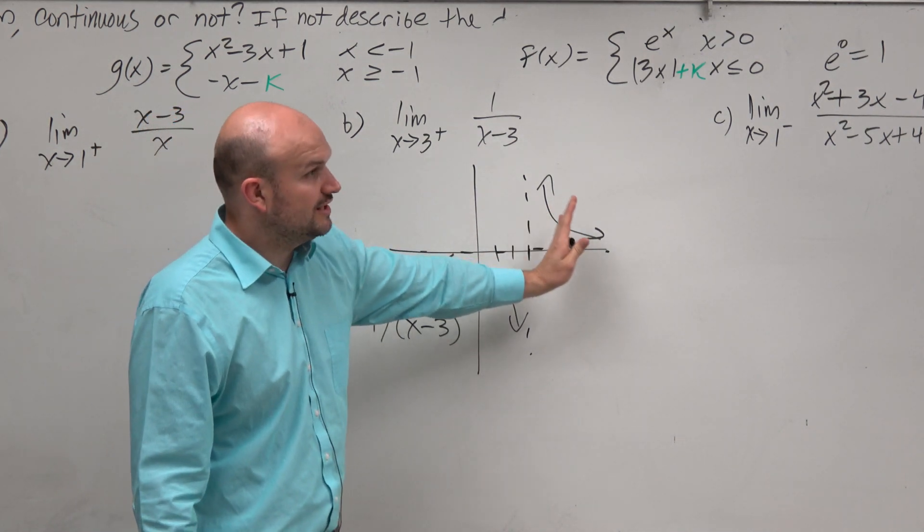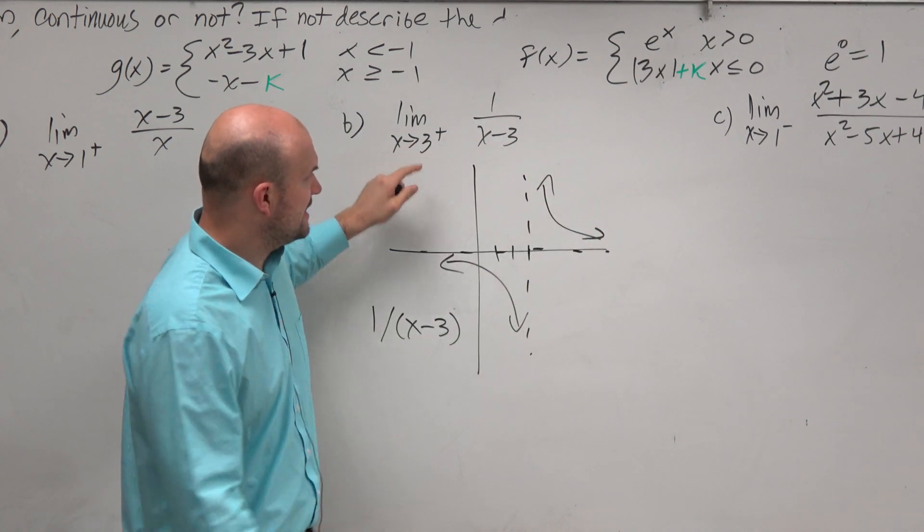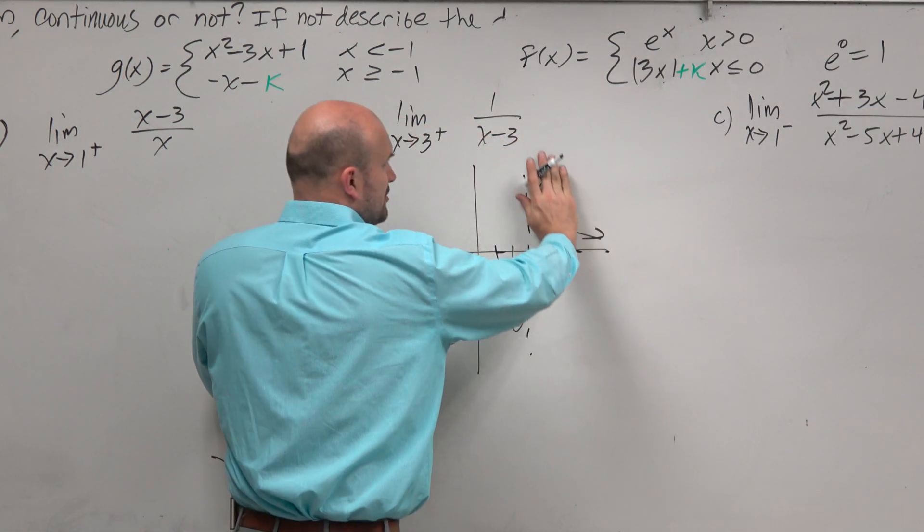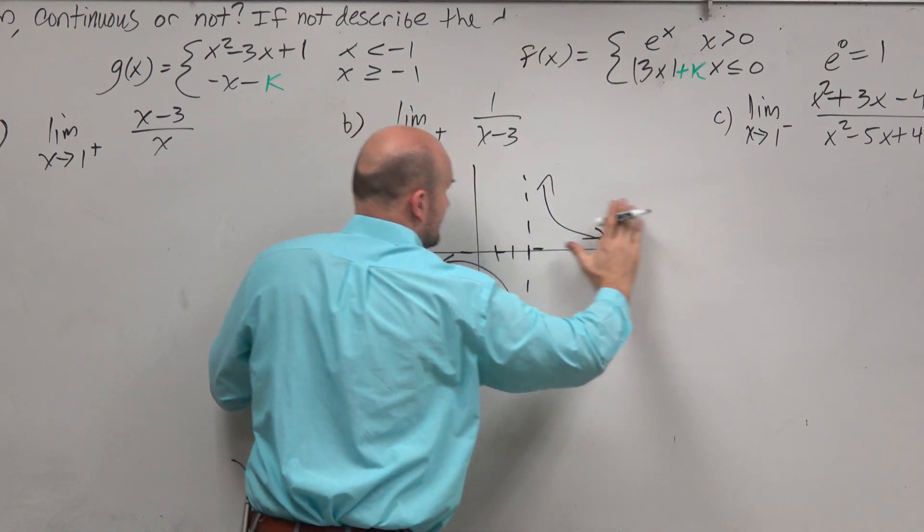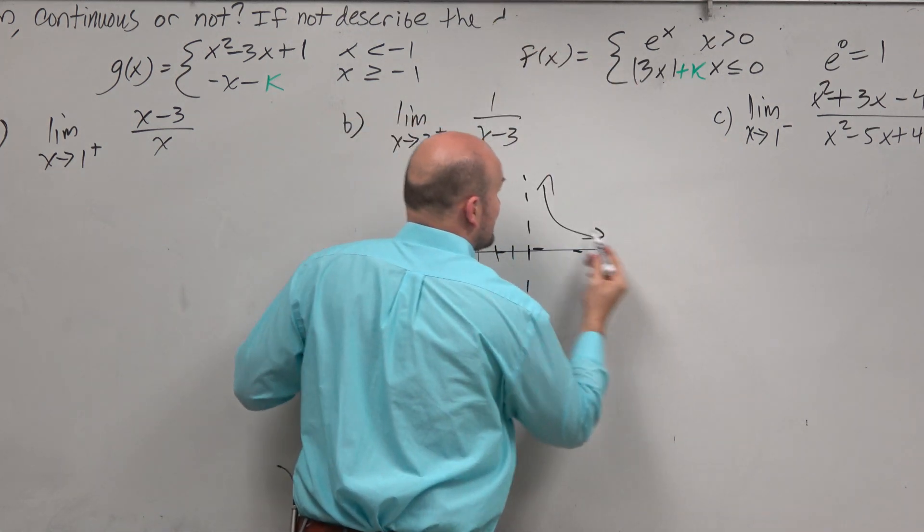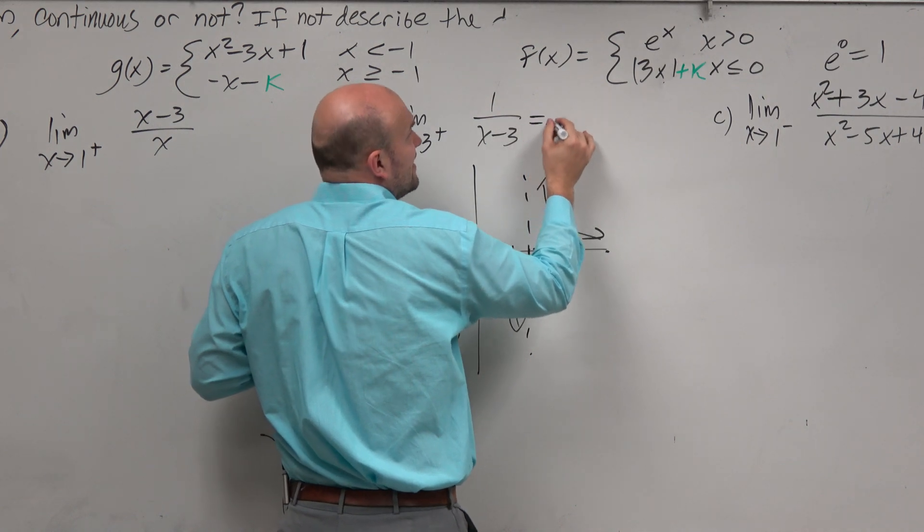But anyways, here's our function. We're approaching 3 from the right, so our right hand. And you can see this graph is approaching, keeps going up. So it's going to approach infinity.